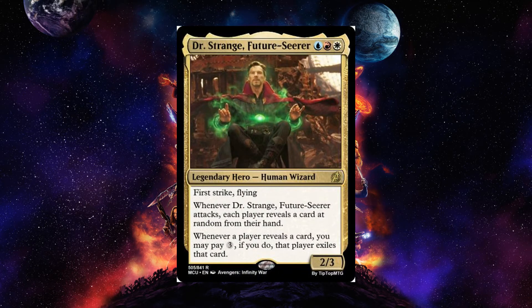Doctor Strange Futuriseer is blue, red, and white for a legendary hero human wizard 2-3 with first strike and flying. Whenever he attacks, each player reveals a card from their hand at random. Whenever a player reveals a card, you may pay three — if you do, that player exiles that card. This is a great commander ability: if you make someone reveal the top ten cards of their library, you can pay three mana for each one to exile it. Any effect that causes a reveal can be converted into exile. It captures the whole 'I'm seeing the future, no no no, change it' feel.